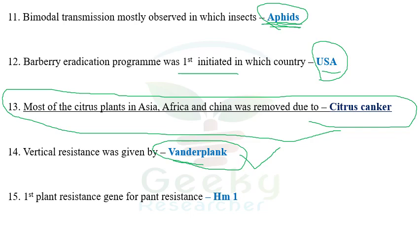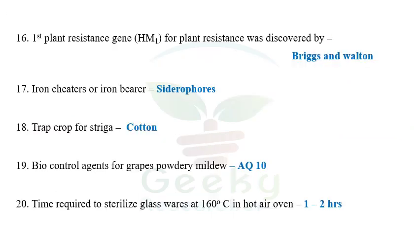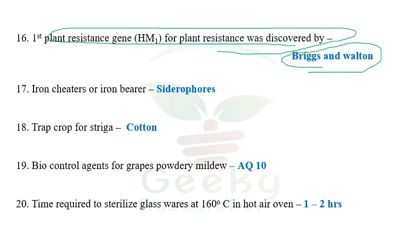The next question: HM1 is the first plant resistance gene to be isolated, isolated by Briggs and Walton. These two scientists were first to discover and isolate the first plant resistance gene, HM1. Here, the 'm' in HM1 is lowercase. This is a very important question — out of three times I've written this exam, I have seen this question more than two times, and in various other entrance exams as well.